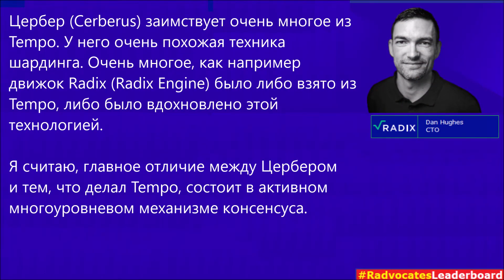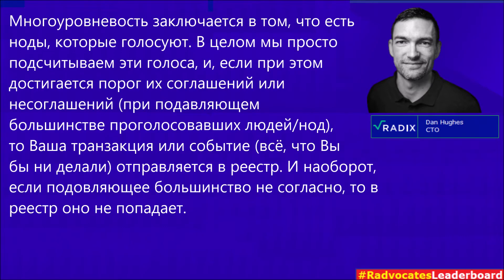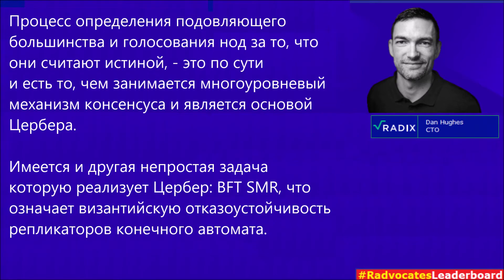Cerberus takes a lot of the stuff that was in Tempo, so it has a very similar sharding scheme and a lot of the technology such as the Radix engine. The main difference with Cerberus versus Tempo is that it's an active multi-degree consensus mechanism. Multi-degree means nodes are voting, and if a super majority agree, your transaction gets committed to the ledger. If a super majority disagree, it doesn't. That's essentially what a multi-degree consensus mechanism does, and that provides the foundation for Cerberus.